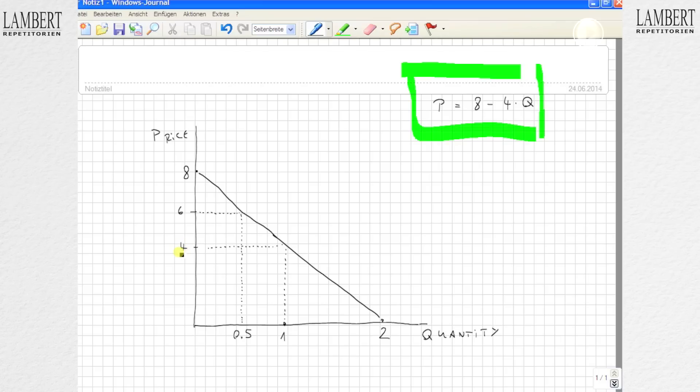...equal to 4, for example, if the price equals 4, we get the quantity demanded equal to 1, because 8 minus 4 times 1 equals 4. So you put the price on the left side of the equation.